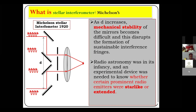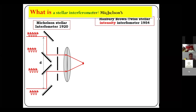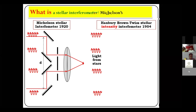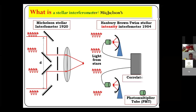Radio astronomy was in its infancy between 1920 and 1954, and an experimental device was needed to know whether certain prominent radio emitters were extended sources. Here came the masterstroke of the Hanbury Brown and Twiss interferometer, the device of 1954. Instead of using two mirrors, they used two radio dish antennas. The signals received on these antennas were focused directly onto separate photomultipliers (shown here as green cylinders). The signal from these two photomultipliers was fed to a correlator, which resulted in the average value of the product of photocurrent from the two photomultiplier tubes — effectively measuring the second-order correlation between the input signals.